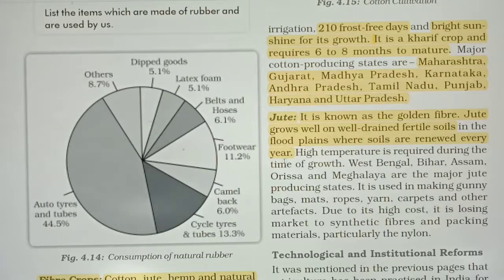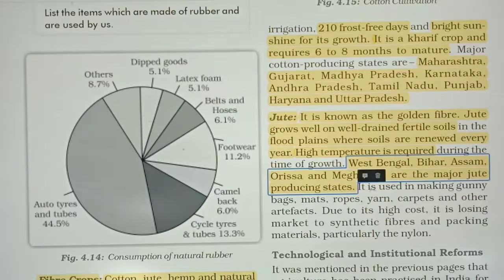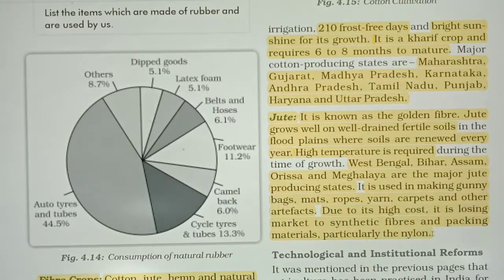Jute requires high temperature for its growth. Major jute producing states are West Bengal, Bihar, Assam, and Odisha. Jute is used in making gunny bags, mats, ropes, yarn, carpets, and other artifacts. However, due to its high cost, it is losing market to synthetic fibers and packaging materials, particularly nylon.